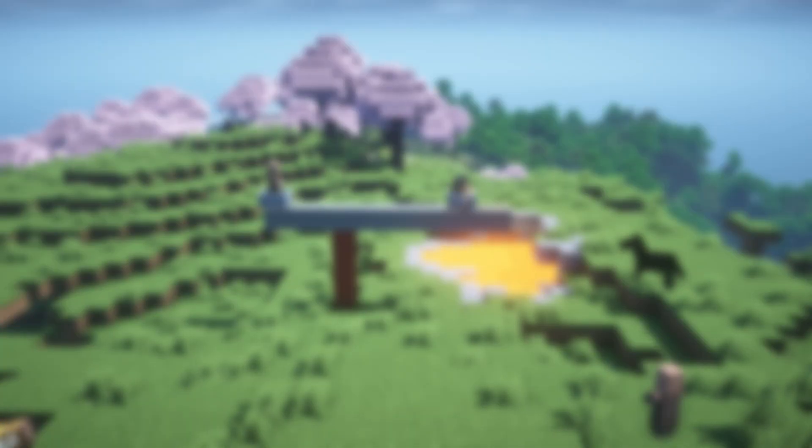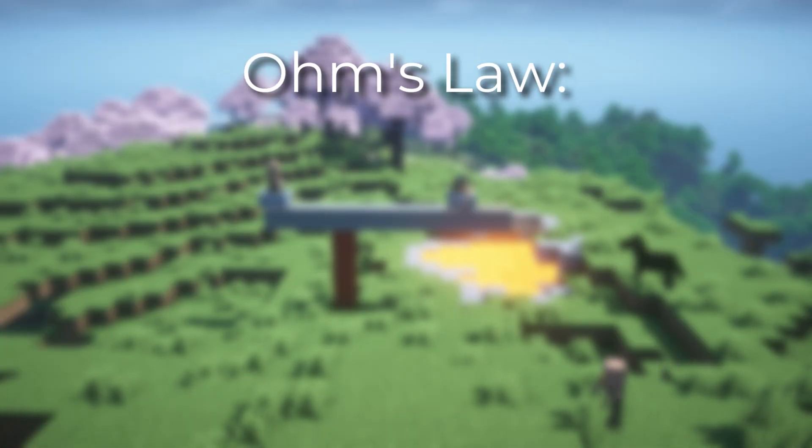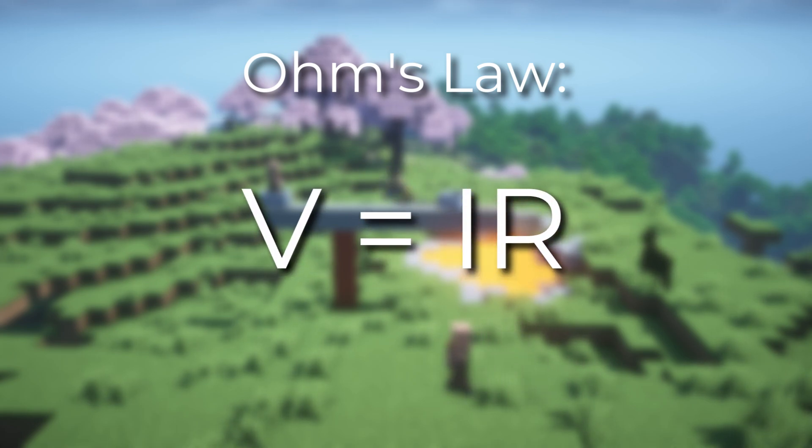So the equation that will tie all of these values together is called Ohm's law, and you'll be using it a ton in unit 2. It comes in the form V equals I times R. V is the voltage, I is the current, and R is the resistance.